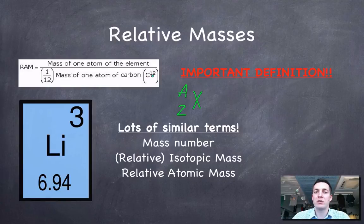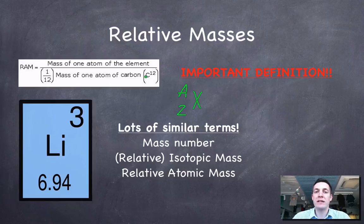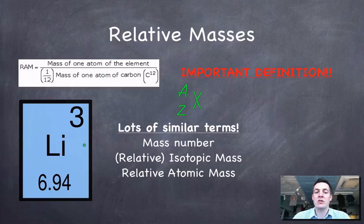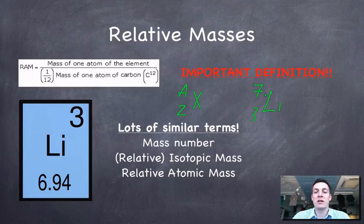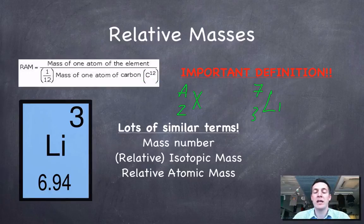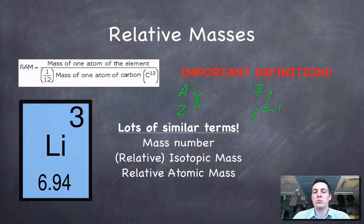So an atom of carbon-12 — that is to say six protons and six neutrons — we define that as having a mass of exactly twelve. Then we take one twelfth of that as being exactly one. And then we divide the mass of our one atom of the element by that. So if I had an atom of lithium with a mass number of seven, then its relative atomic mass would be seven times greater than one twelfth of the mass of one atom of carbon-12. It wouldn't be exactly seven, but if we assume that protons and neutrons are exactly one and electrons don't really weigh anything, then this would be exactly seven. But this is its isotopic mass.